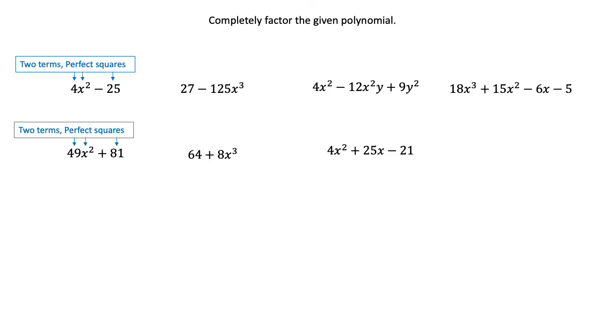When you have two terms and both of those terms have perfect squares in them, you're going to consider that this is a difference of squares or a sum of squares. If it's a difference, you can do the plus-minus pattern. You cannot factor a sum of squares at this point. You will indicate not factorable for that one.